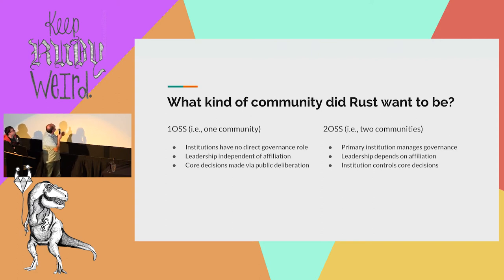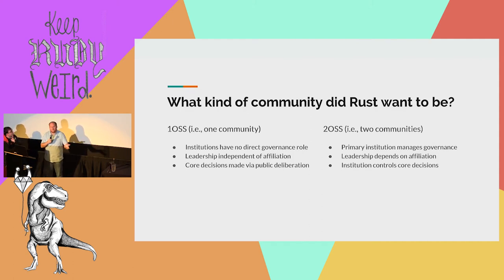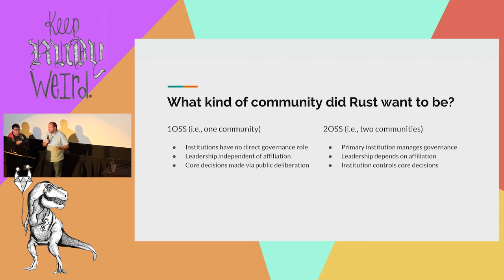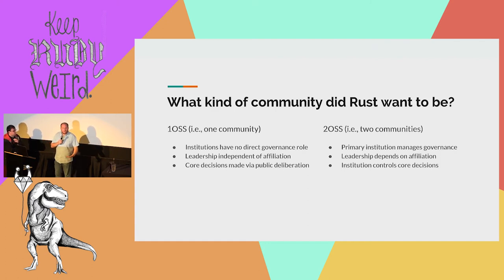What is the relationship between the institution and the community? In one OSS, an institution has no governance role — no institution has any kind of special status. In two OSS, there's one special institution that manages the governance and is in charge. With the leadership structure, you can't actually be a leader unless you work for the institution in a two OSS setting, whereas in the Rust core team there are people who work for multiple companies. Employment is not a factor in the decision of whether you become part of the core team. And maybe the most important part is how decisions get made — is deliberation done within the community, or is community feedback taken and then the real leaders decide?